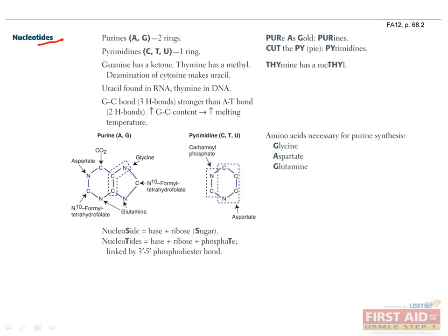Now let's talk about the nucleotides that make up DNA. There are two types of nucleotides, purines, which are adenine and guanine, and pyrimidines, which are cytosine, thymine, and uracil. Uracil is only found in RNA, and thymine is only found in DNA. You can keep purines and pyrimidines straight by using the mnemonic, pure as gold, and cut the pie.